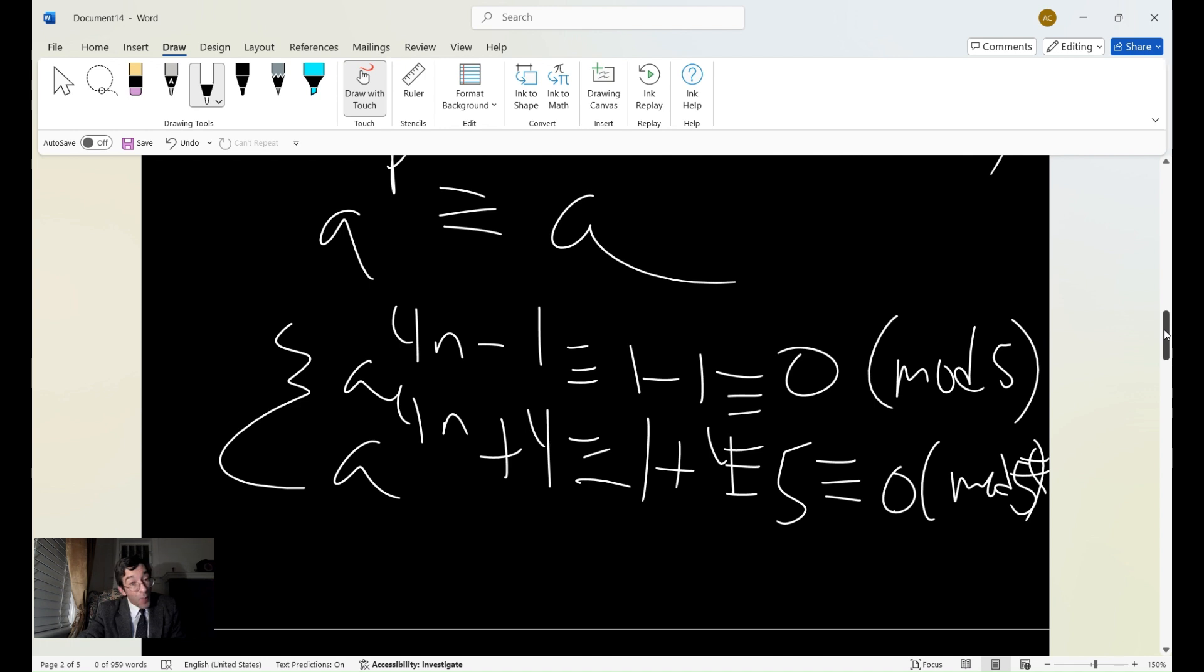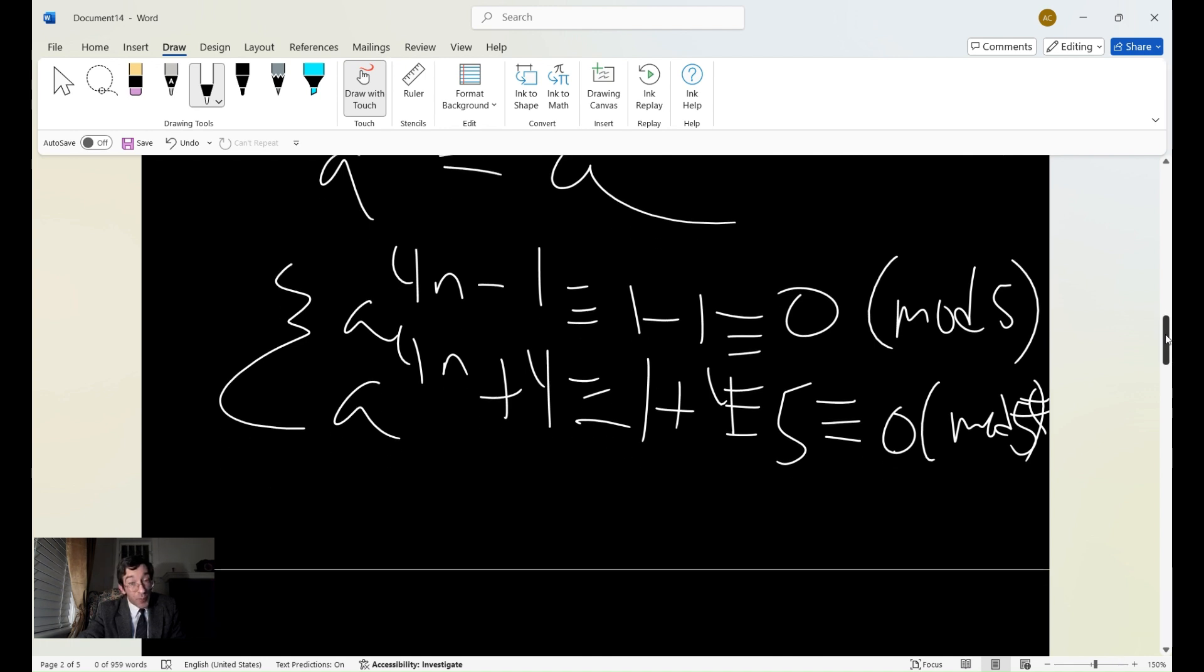is divisible by both, now we've shown that it's divisible by both 4 and 25. It must be divisible by their least common multiple, which is 100.